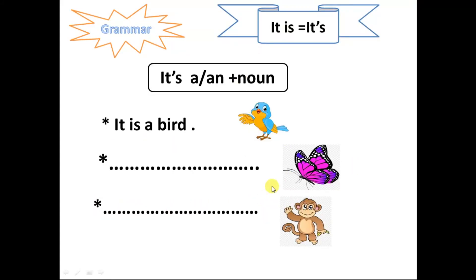It is, it's, plus a or an and noun. When we refer to something, it's a bird. A with nouns start with consonant letters. And an with nouns start with vowels, like A, E, I, O, U. Very good.